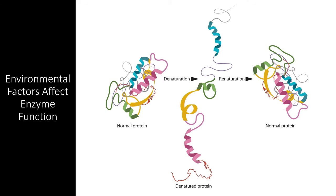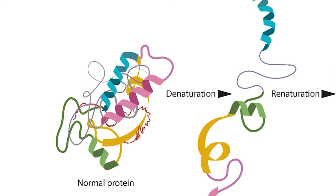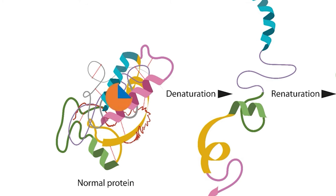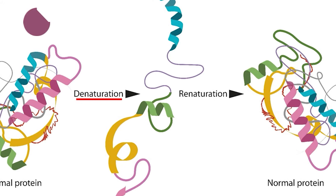Since enzymes operate like any other protein, they too are subject to changes in the environment that can affect their function. Consider a normally functioning enzyme — it is held into a particular shape by a large number of hydrogen bonds and other interactions between amino acids and secondary motifs. These bonds hold the enzyme together, creating a functional active site that allows the enzyme to catalyze a particular reaction. If the bonds holding the enzyme in this particular conformation break down for any reason, the protein becomes denatured. A denatured enzyme is useless because it has no functional active site.